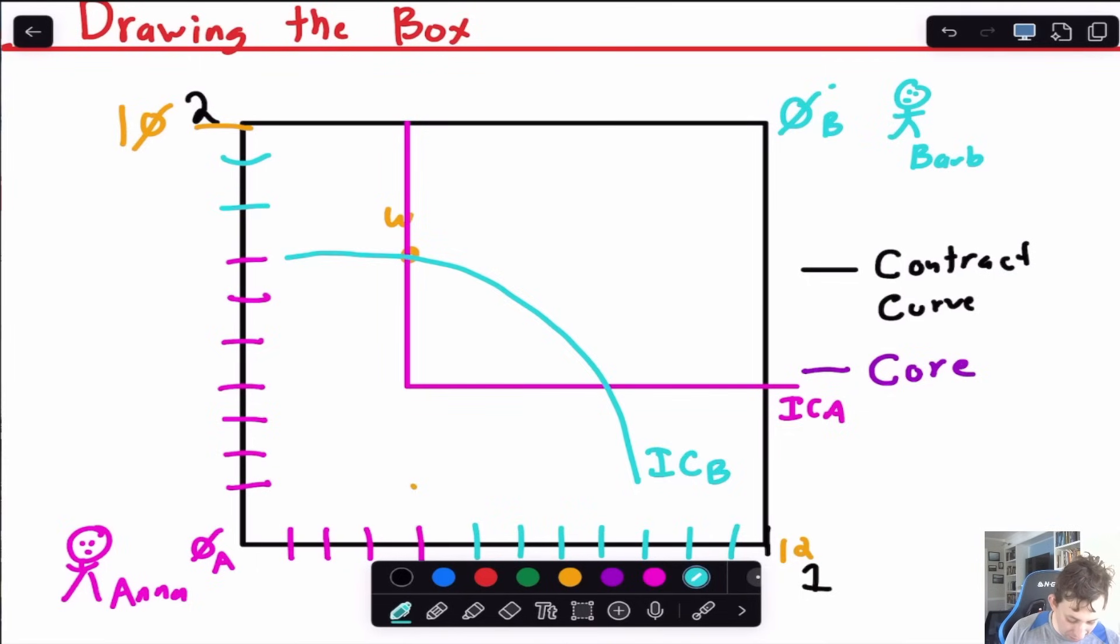If I think about the contract curve in the core, the contract curve for Anna is going to be on this straight line where X equals Y, approximately. The core, or the part in which these people are actually going to agree to trade, is going to be in between their indifference curves, because Anna is not going to agree to any trade that makes her worse than what she started with. Barb is also not going to agree to any trade which makes her worse off. So the core is just going to be this part of it in purple right here.